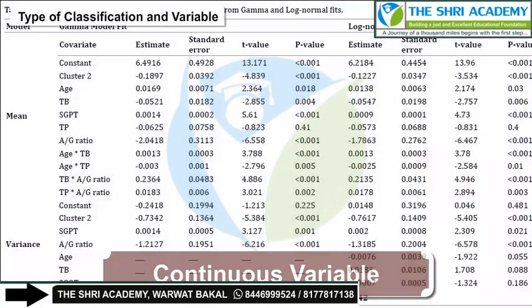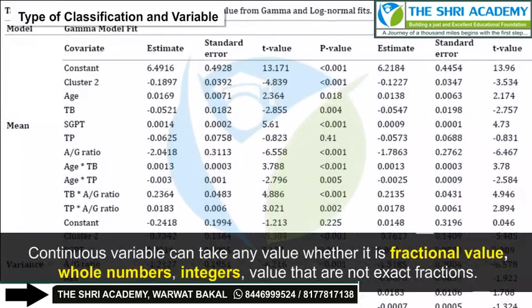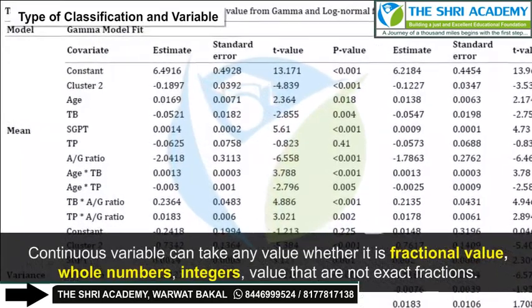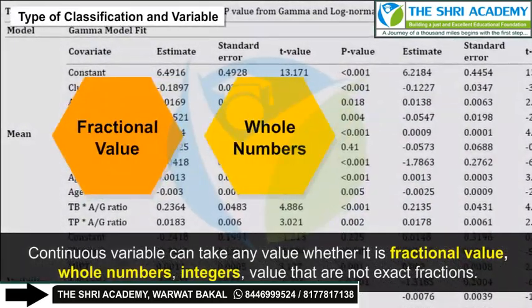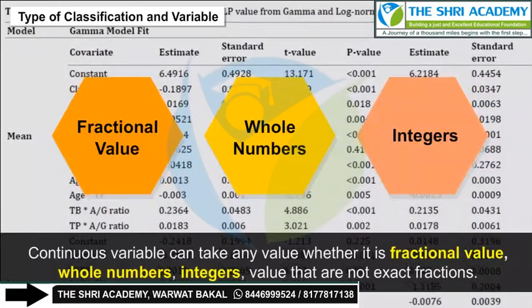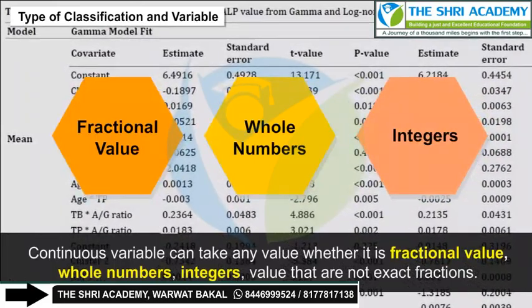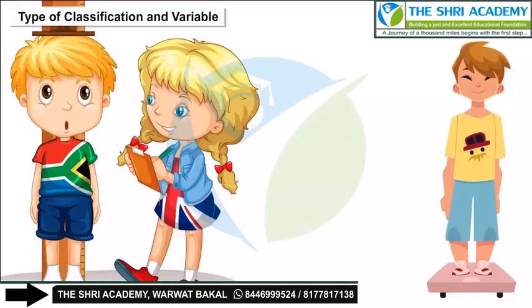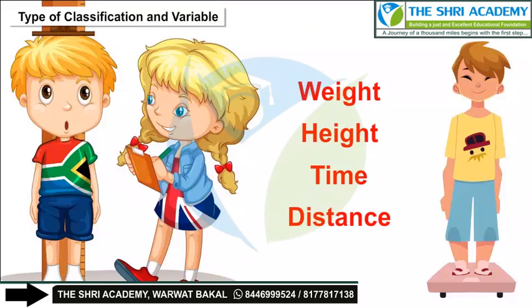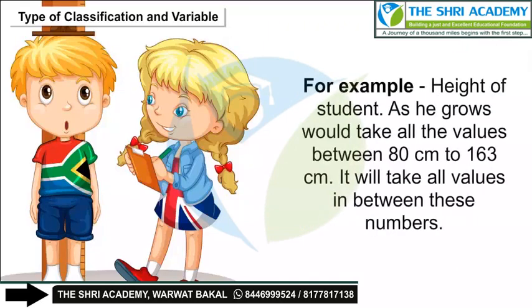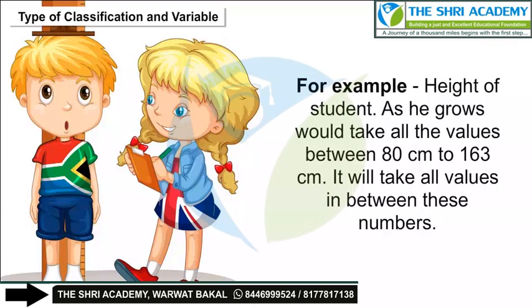A continuous variable can take any value — whether fractional, whole numbers, integers, or values that are not exact fractions. Examples of continuous variables are weight, height, time, and distance. For example, the height of a student as he grows would take all values between 80 cm and 163 cm, including all values in between.